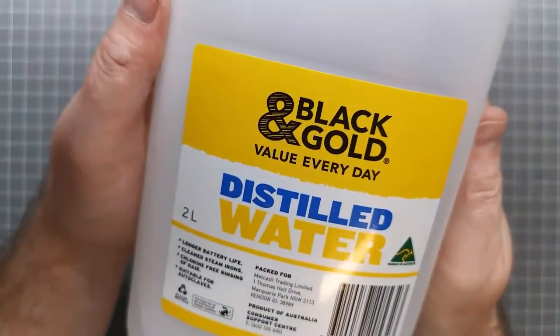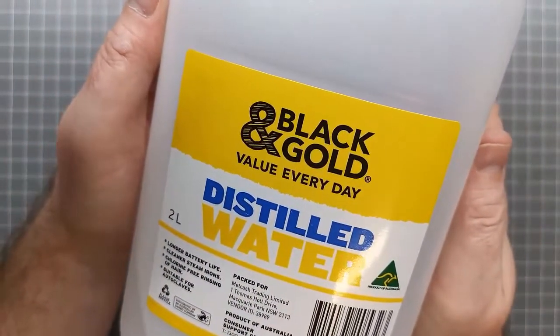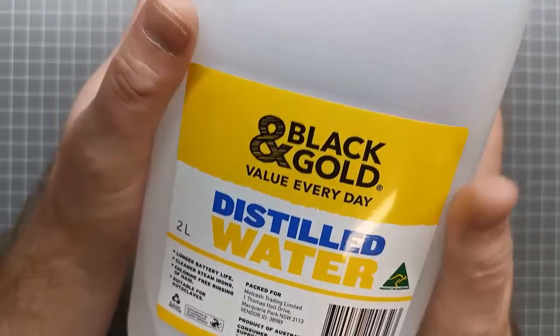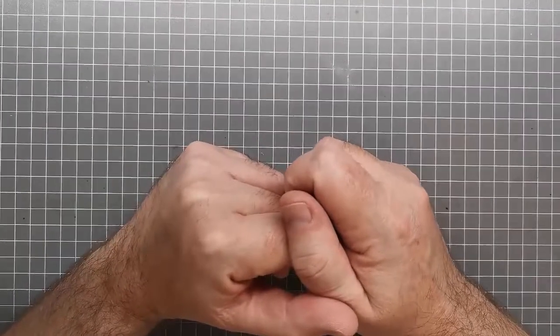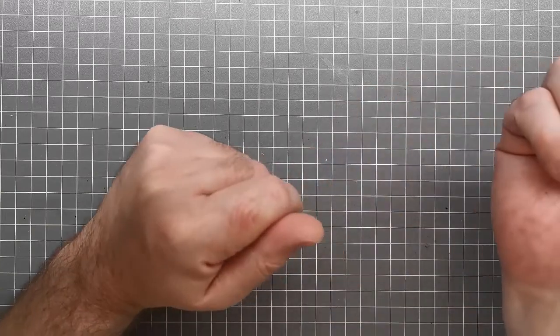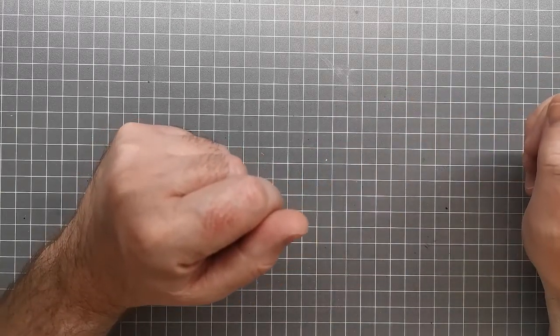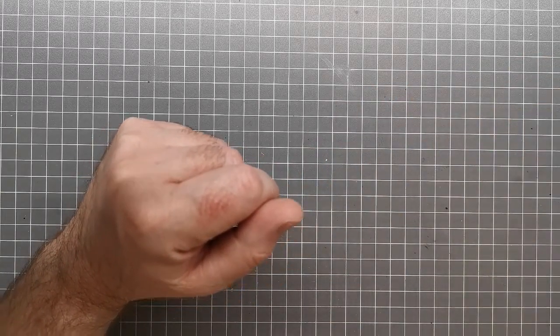You don't want to be using that stuff by itself as a cleaner. I mix it with distilled water. This stuff's dirt cheap, you can get it for about a dollar a liter in Australia. Distilled water has had all the minerals and impurities taken out.